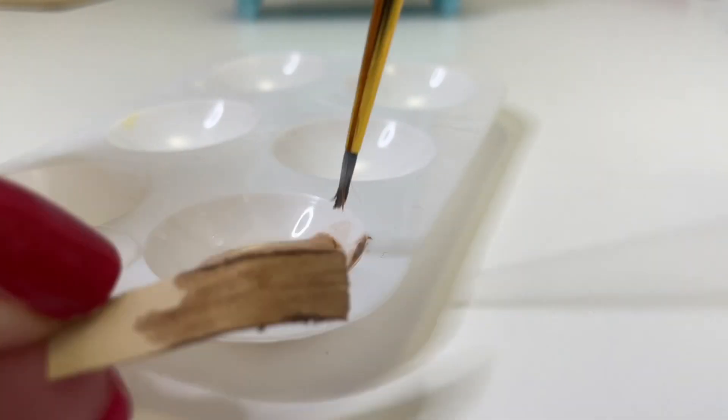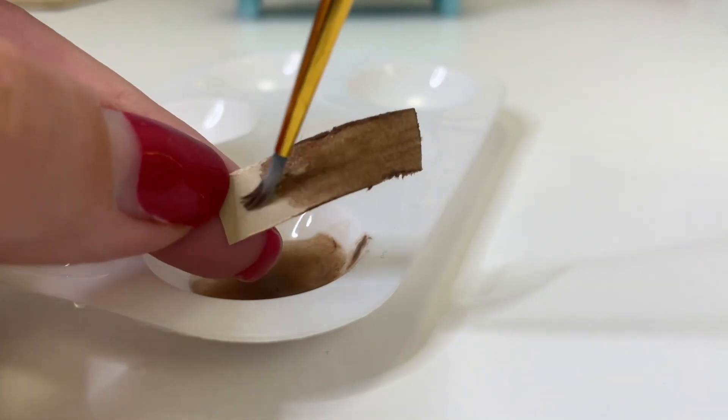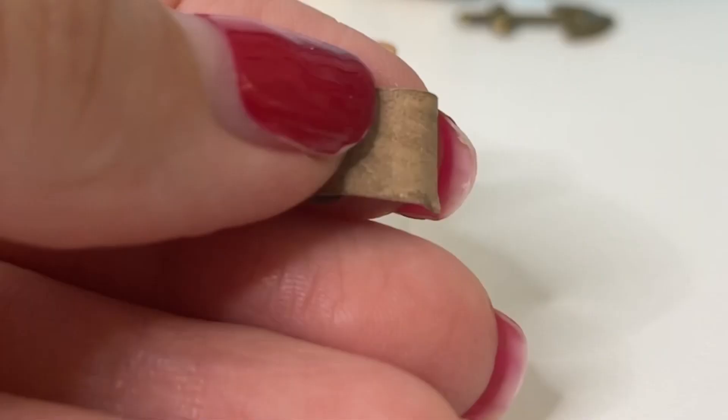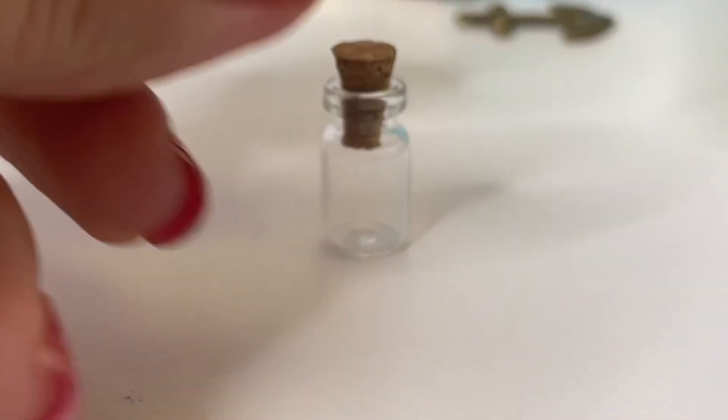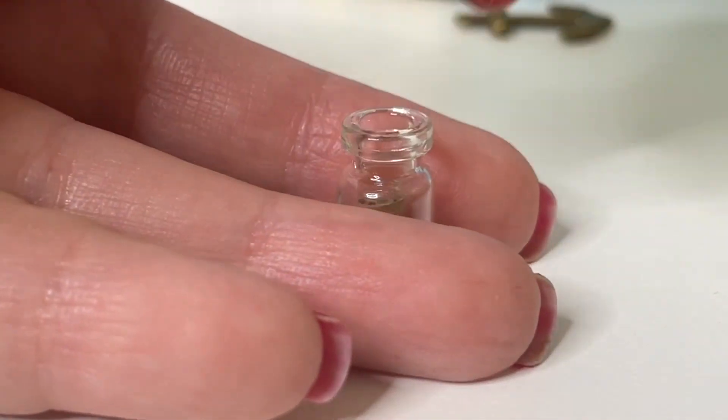And that way it will look like the message has been lost at sea for many years. And now once the paper is dry I just roll it up and then place it inside of the bottle and then put the cork back on.